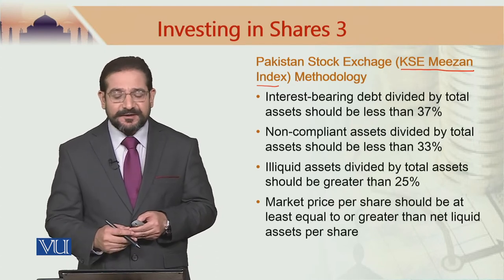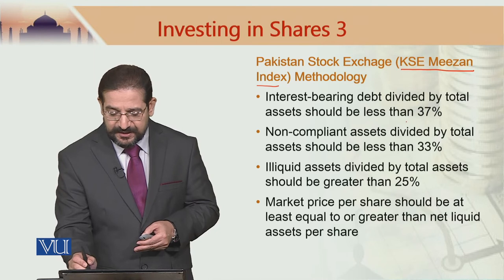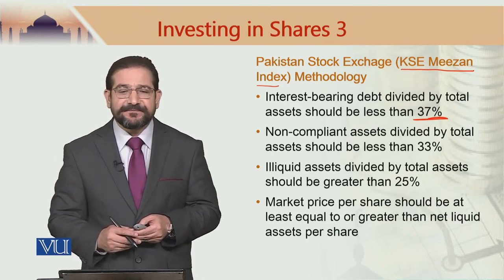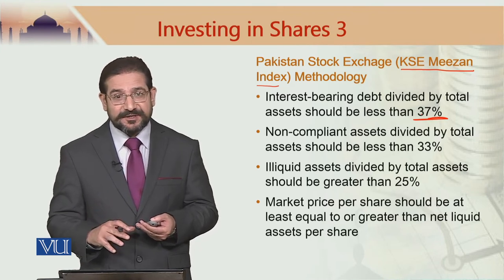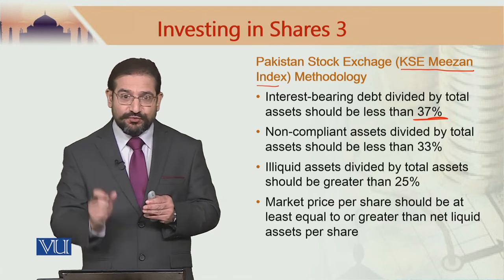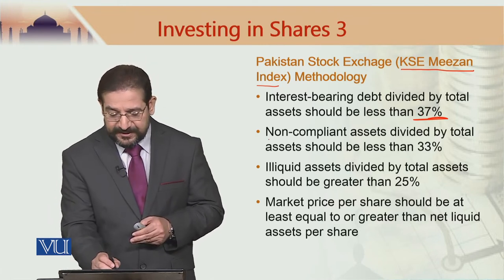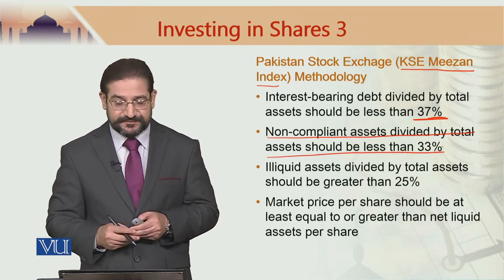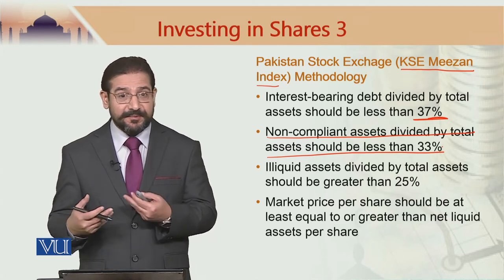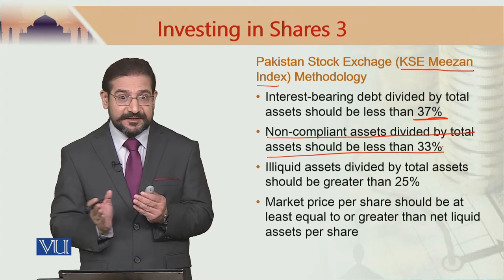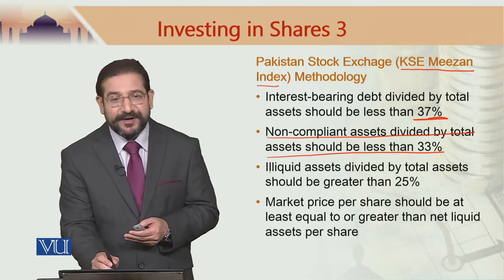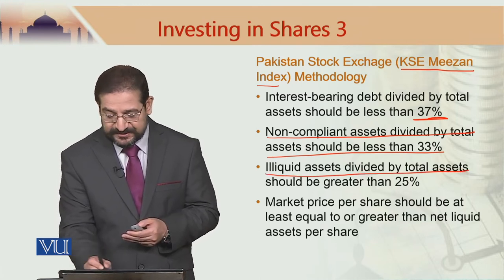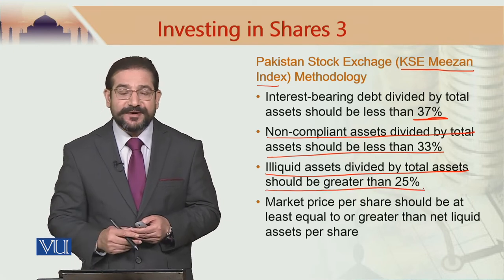Interest-bearing debt divided by total assets should be less than 37%. We will talk about why 37% and not 33%, but for the time being let us go through these numbers. Non-compliant assets divided by total assets should be less than 33% — they are talking about non-compliant assets, which other methodologies do not mention. Illiquid assets divided by total assets should be greater than 25%.